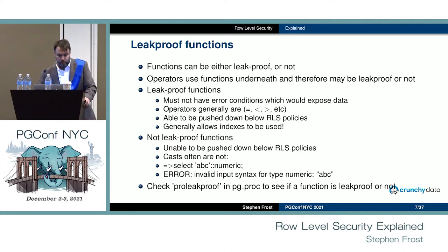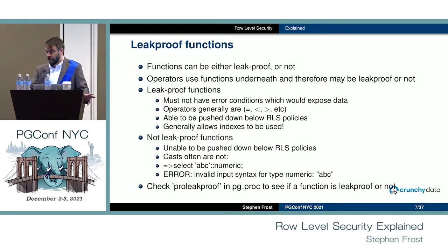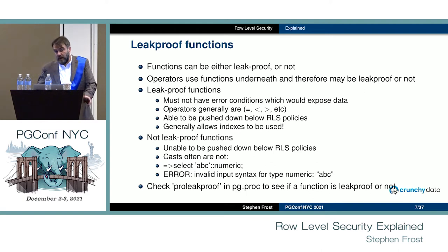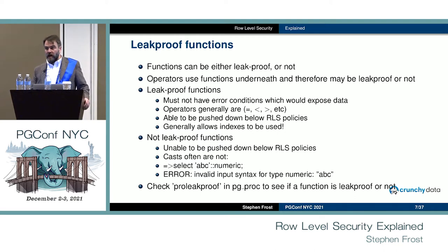You can check the proleakproof column in pg_proc in the catalog to see if a given function is leak proof. Postgres hackers have looked at all functions marked as leak proof and believe they are, but that doesn't mean every function not marked as leak proof actually leaks information. If you find an operator you feel should be marked leak proof, I encourage you to prove it to yourself and bring it to the mailing list — we're open to making more things leak proof, because that can really help with query optimization.